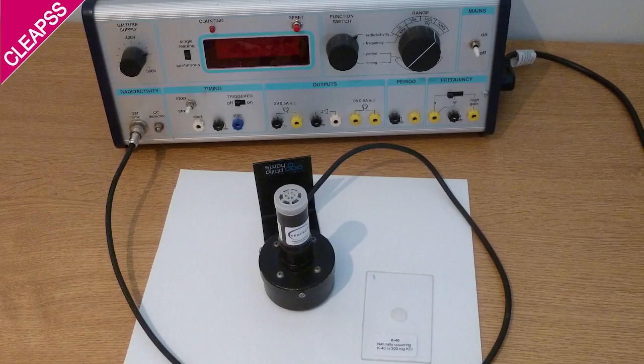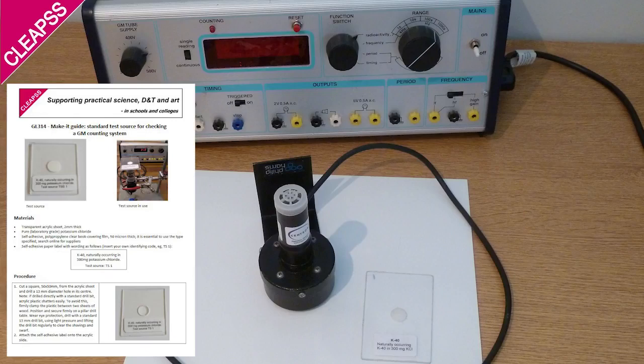OK, the equipment we need is a counter. The one here is a Philip Harris digi-counter, but older ones such as Panax are absolutely fine. The tube must be a ZP1481 or equivalent, for example the MX168 or a ZP1490. Also we need a tube holder and a test source. You can buy a test source from IPC Electronics or you can make one following our guide GL314.